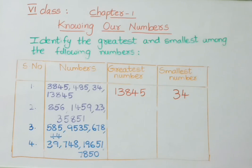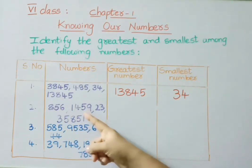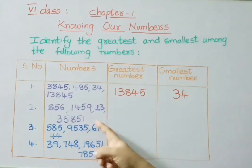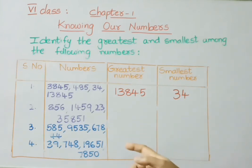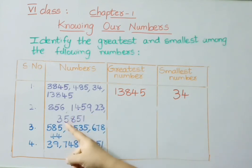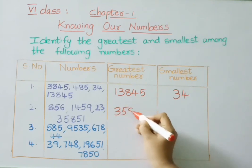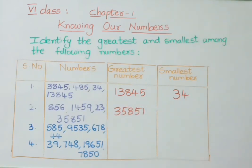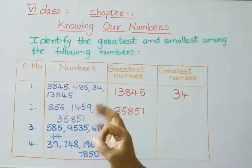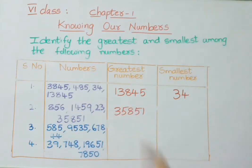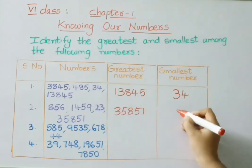See the second question: 856, 1,459, 23, and 35,851. We have to find the greatest and smallest numbers. The greatest number is the 5-digit number, that is 35,851. Now see the remaining numbers: 856 is a 3-digit number, 1,459 is a 4-digit number, and 23 is a 2-digit number. Among these, the 2-digit number is the smallest number.